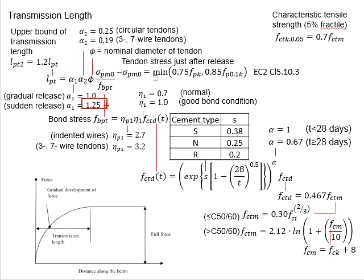Alpha_2 represents the effects of the tendon type. If circular tendon is used, alpha_2 equals 0.25. If 3 or 7-wire tendon is used, alpha_2 equals 0.19. Phi represents the diameter of the tendon.